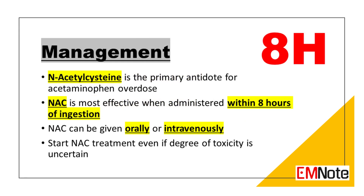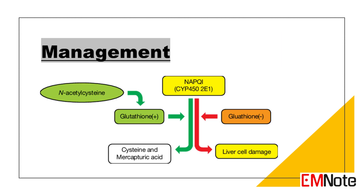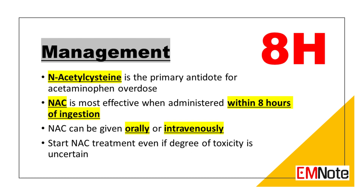Management. N-acetylcysteine is the primary antidote for acetaminophen overdose, effective in preventing hepatotoxicity when administered promptly. It is a glutathione precursor that prevents or minimizes hepatotoxicity by increasing hepatic glutathione stores and detoxifying NAPQI. N-acetylcysteine should be started within 8 hours of ingestion for greatest efficacy, and can be given orally or intravenously. Treatment should be given even if the degree of toxicity is uncertain until more definitive information is available.